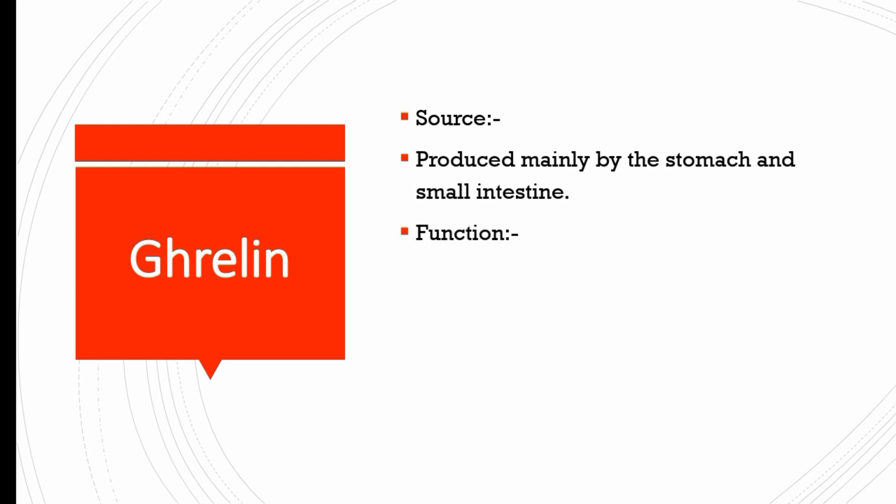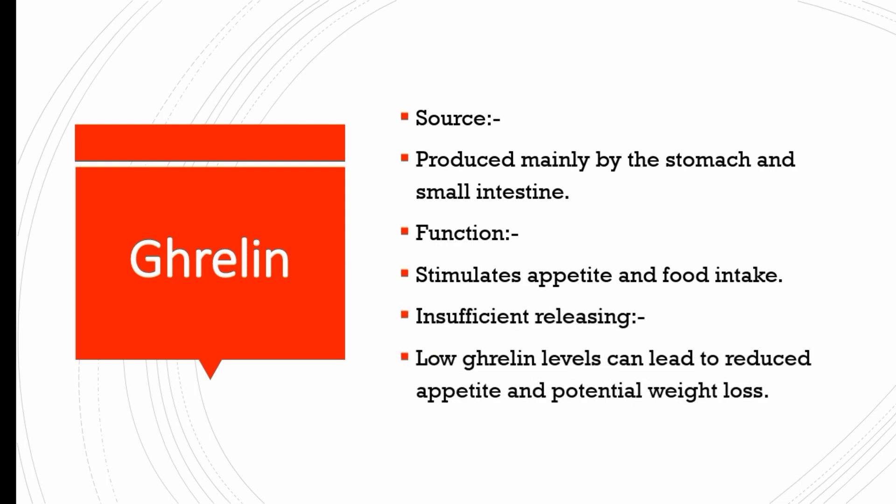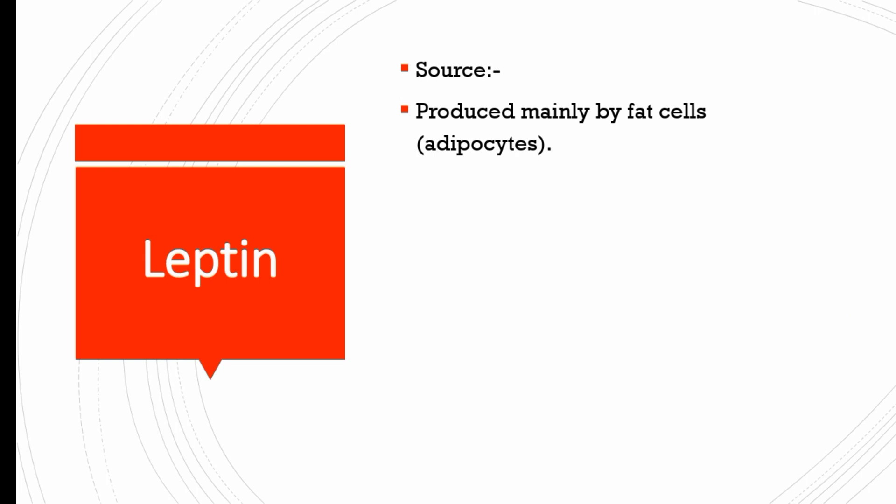Ghrelin is produced mainly by the stomach and small intestine. It stimulates appetite and food intake. Low ghrelin levels can lead to reduced appetite and potential weight loss.